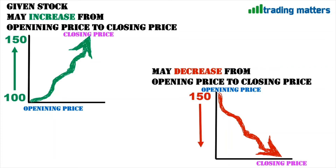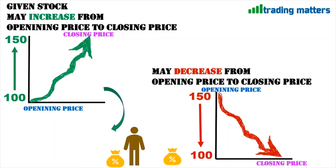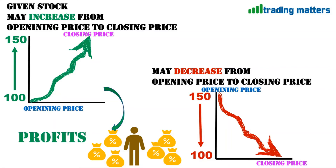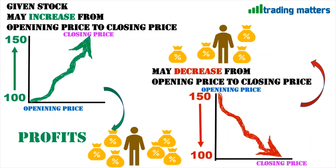In the second case, the stock opened at 150 and moved all the way down to 100 and closed. In the first case, stock price value is increasing, so investors gain money and eventually end up in profits. Whereas in the second case, stock price value is decreasing, so investors lose money and eventually end up in losses.